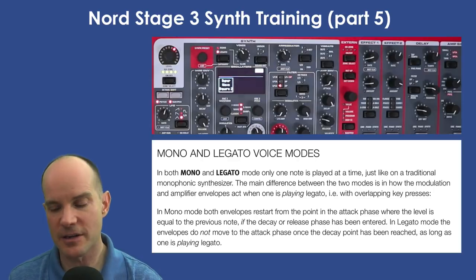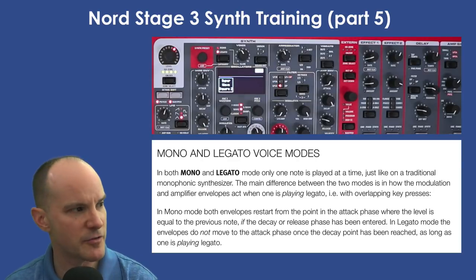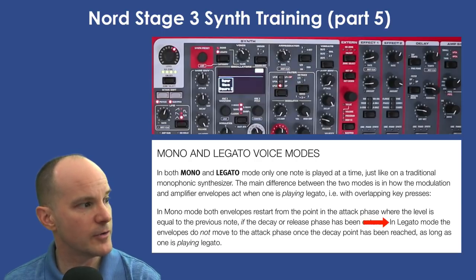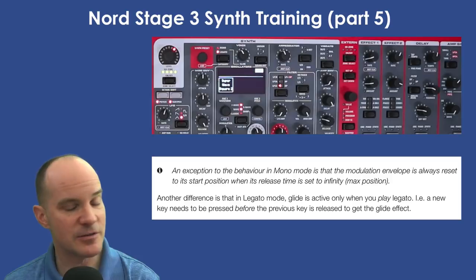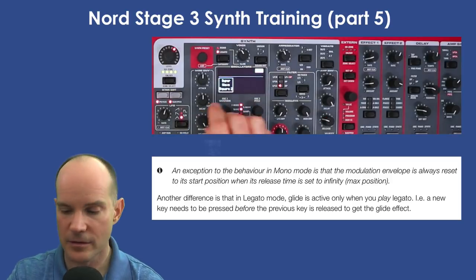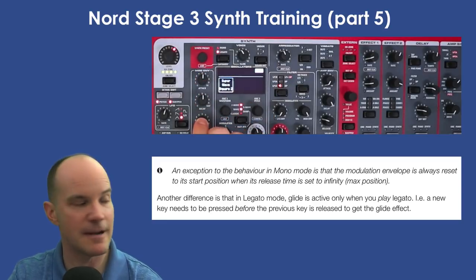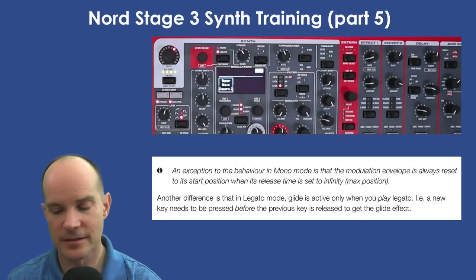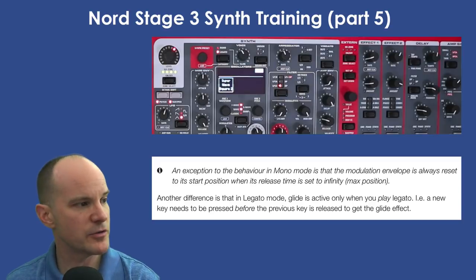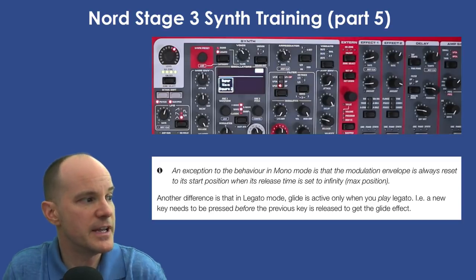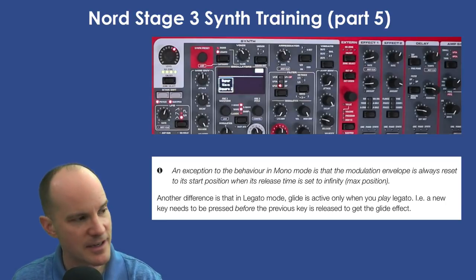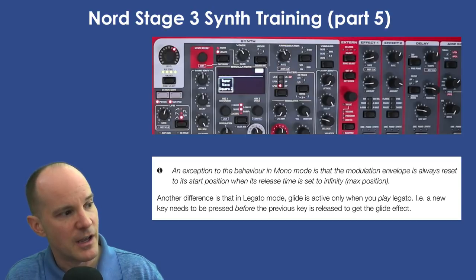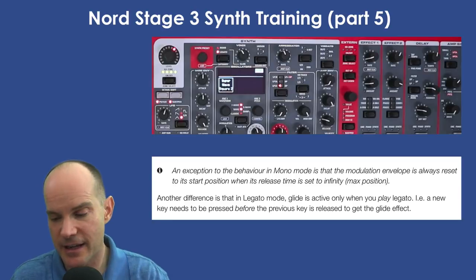An exception in mono mode is that the modulation envelope is always reset to its start position when the release time is set to infinity — that's a setting of 10 on the modulation envelope release knob. Another difference is that in legato mode, glide is only active when you play legato: a new key needs to be pressed before the previous key is released to get the glide effect. I'm going to start in reverse order here, because in legato mode there's no glide unless you're playing in a legato style.